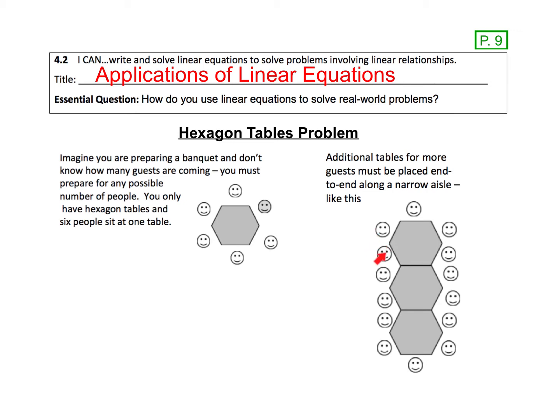Here's a picture of three hexagonal tables pushed together. You'll notice that when I start pushing the tables together, no longer do we have six people at a table. Because every time we push the sides together, we lose these seats right here. So what we're going to try to do is come up with a bit of a pattern.